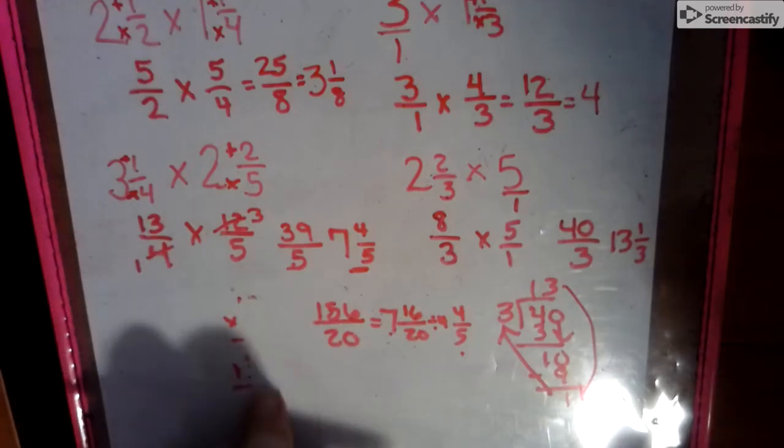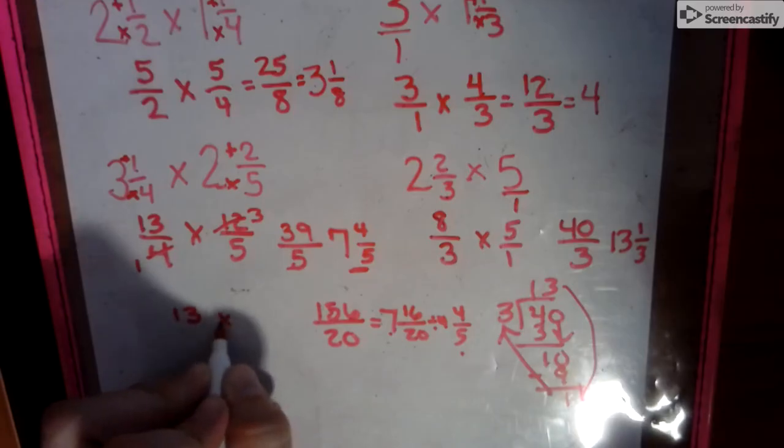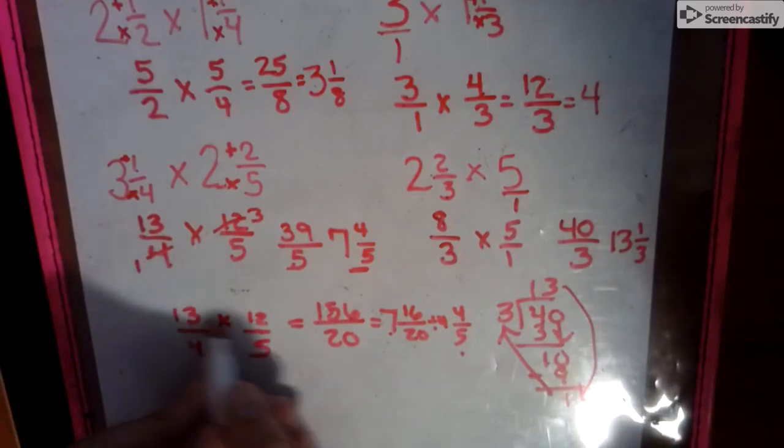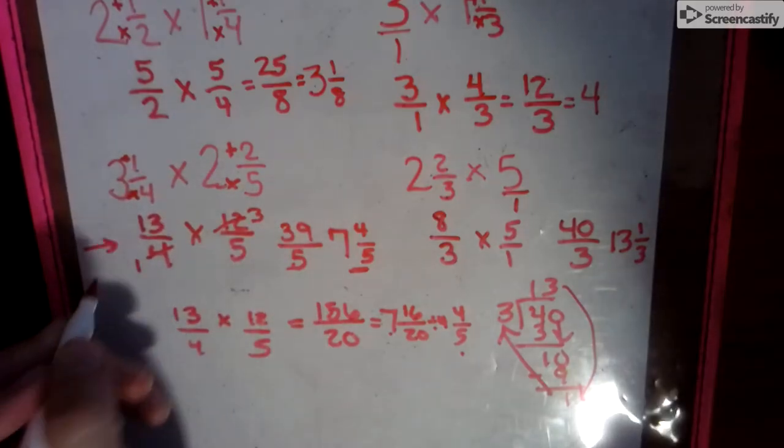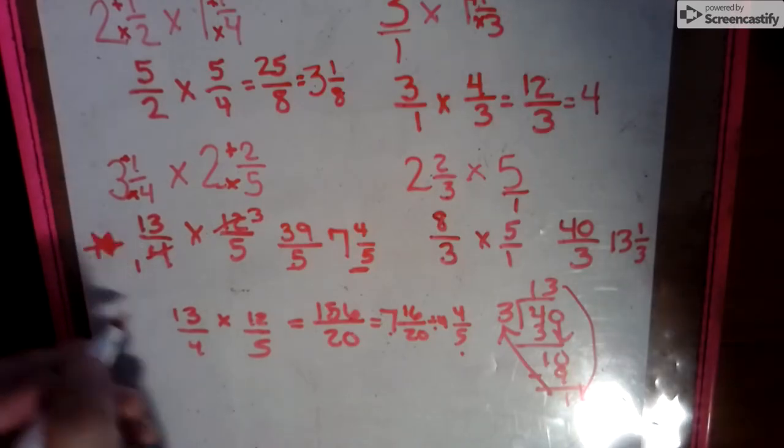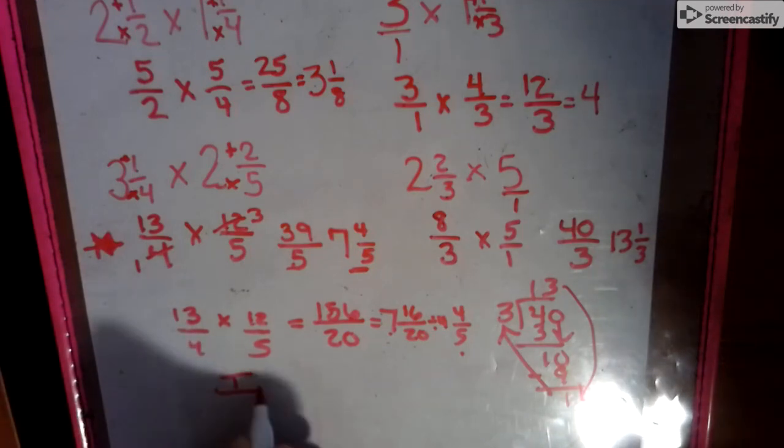Okay. So remember, when in doubt, if you don't like diagonal cross-outs here, you can just still go straight across 13 times 12, 4 times 5. That's just another way. This is just simplifying early. Or if you don't like this, then just write this. It's up to you. And as always,